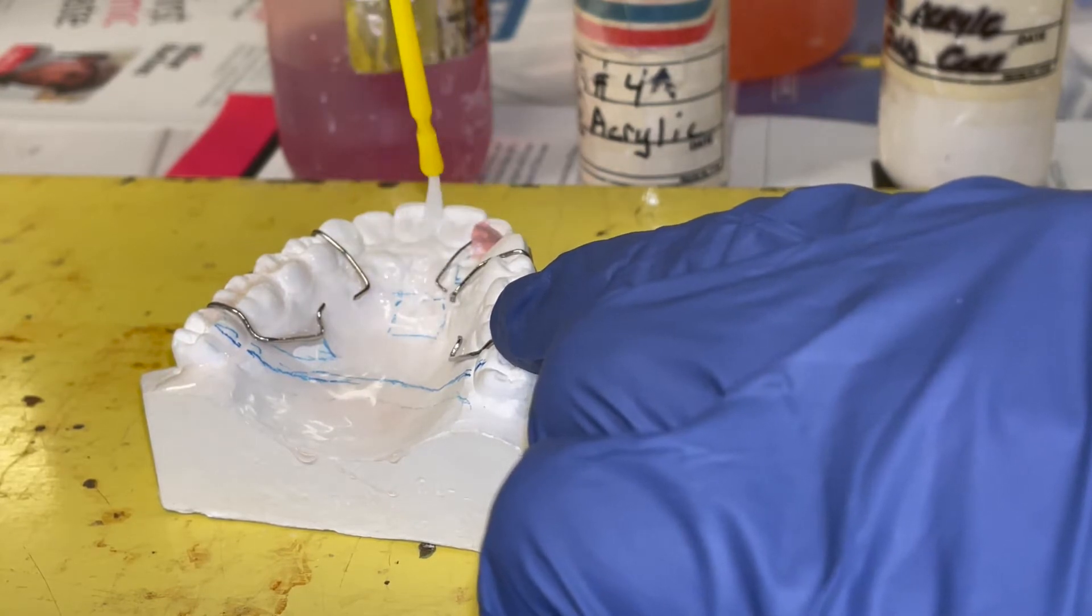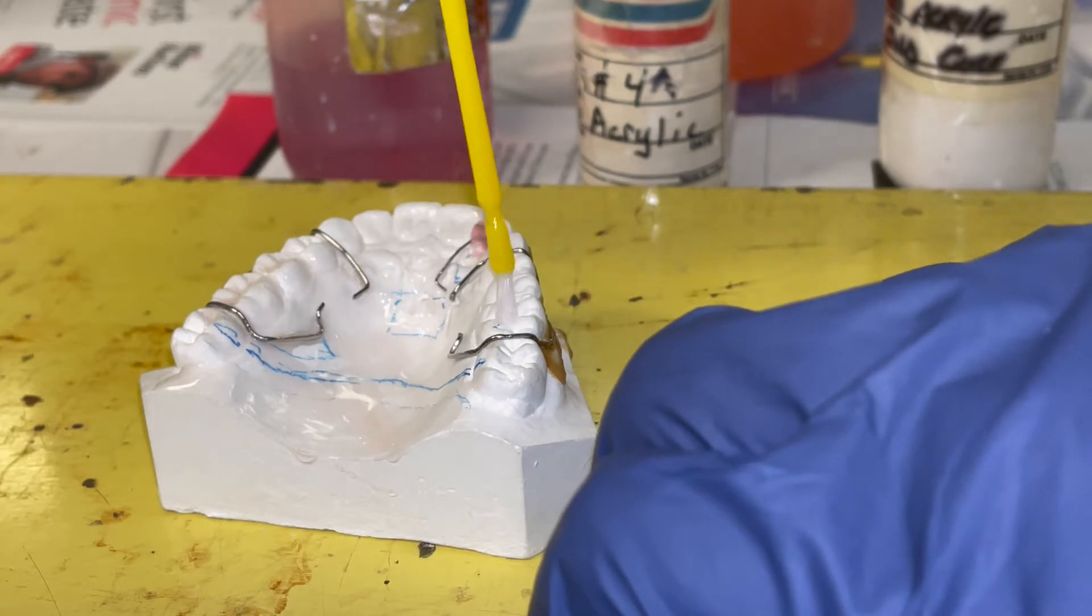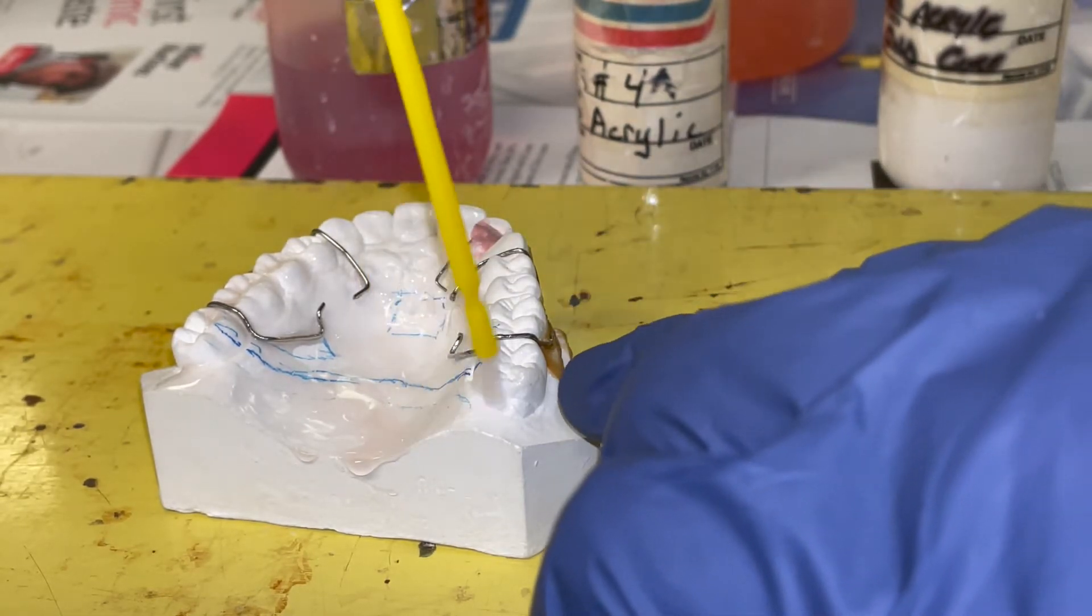After you have applied the tinfoil substitute, you just want to blow it off with a little bit of air to make sure no clumps are underneath your wires.